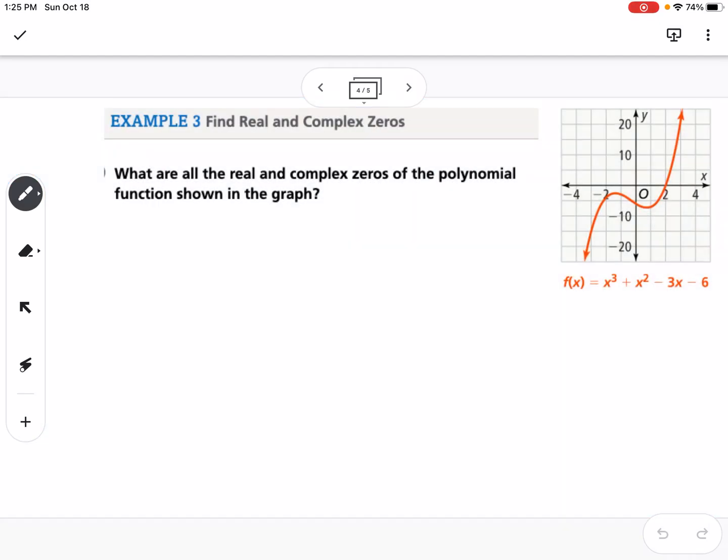Example 3 is to find all the real and complex zeros of the polynomial function shown in the graph. So what we're going to do is we can look at the graph. So technology can help us a lot with these types of problems. So we're going to look at the graph, and we notice that it looks like it's crossing at positive 2, and we have a function down here as well. So what I'm going to do, I'm going to start out with synthetic division. So I have 1, 1, negative 3, negative 6, and we're going to use 2 to check because we can see from the graph it looks like it passes through 2.